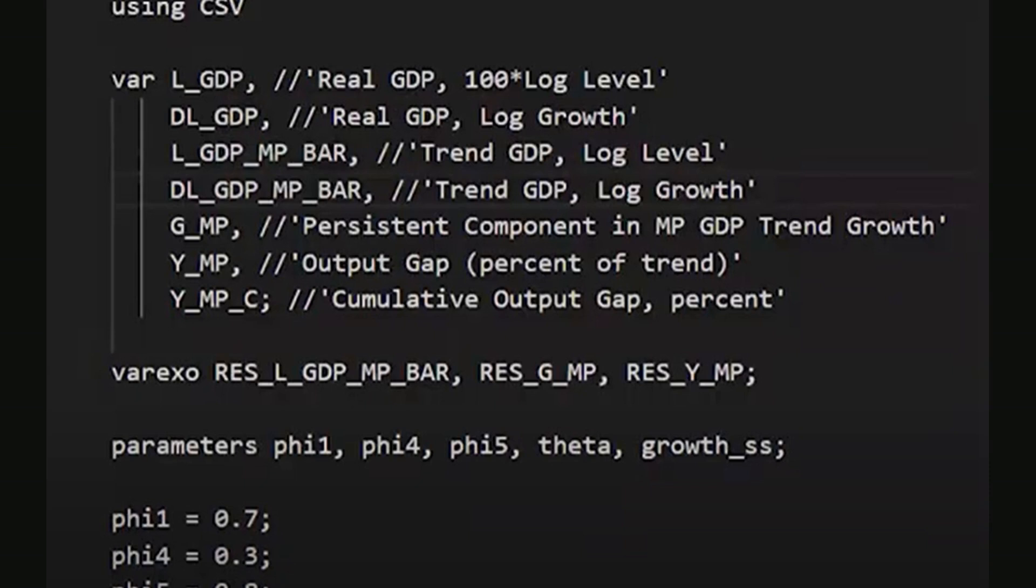We begin by introducing the package CSV in Julia. Using the using command, we upload the CSV package to work with a file containing historical U.S. real GDP data.